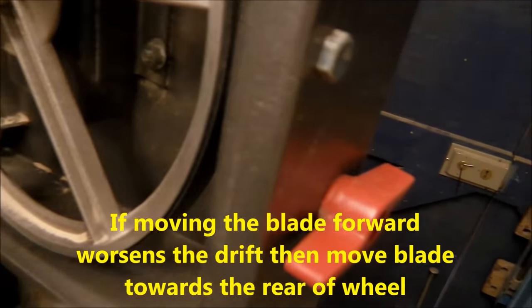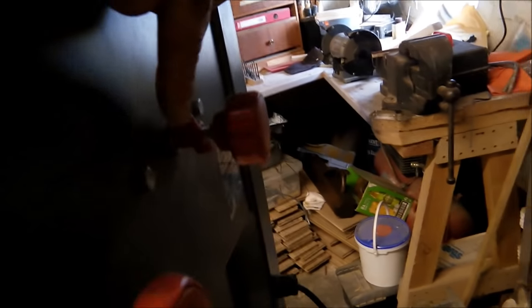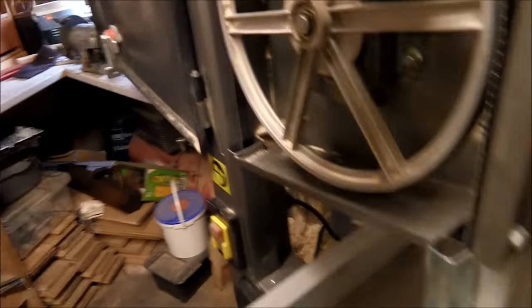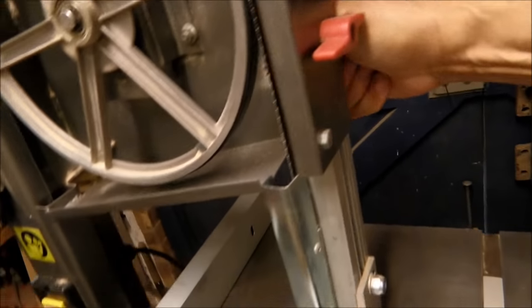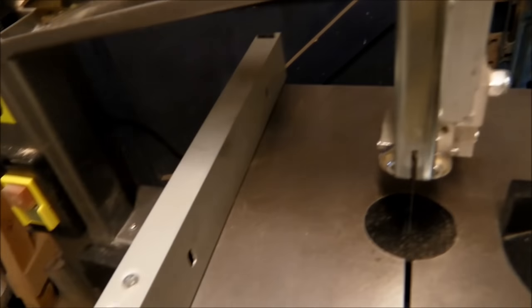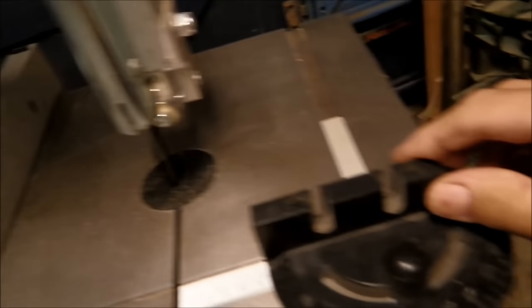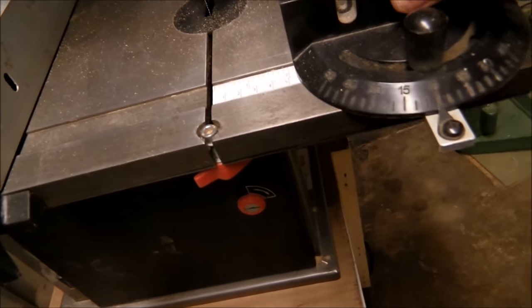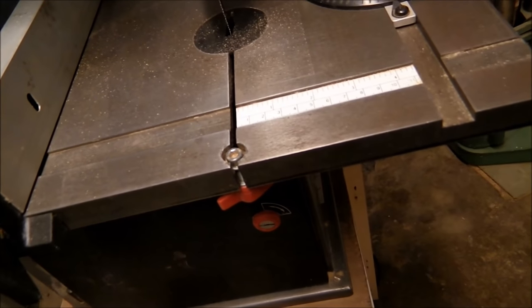Once it's cutting without veering, lock that and then test it by using your mitre fence. Put a piece of wood across there and see if it cuts square.